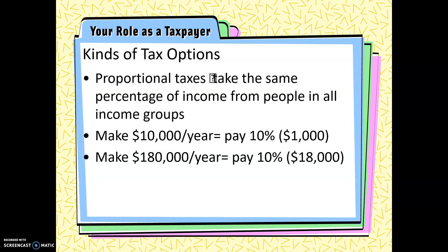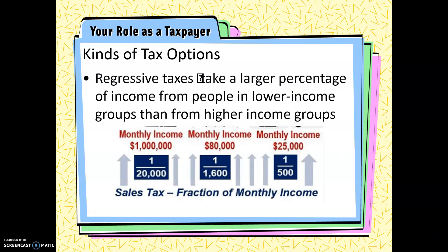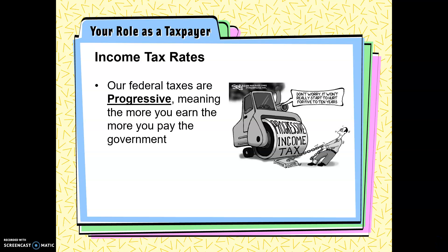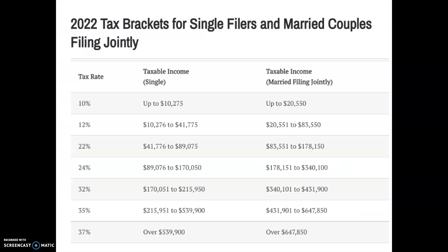There are three kinds of taxes. A proportional tax means everyone pays 10% — if you make $10,000 you pay $1,000; if you make $180,000 you pay $18,000. Regressive taxes take a larger percentage of income from lower-income groups than higher-income groups — not many countries use regressive taxation. Progressive is what we do: we have different tax brackets. If you make $10,000 a year you pay 10%; if you make $180,000 a year you pay 32%. Our federal taxes are progressive — the more you earn, the more you pay. Most parents are somewhere in the 12% or 22% bracket.